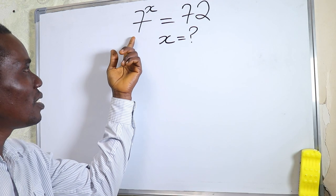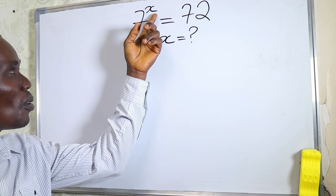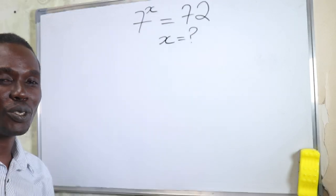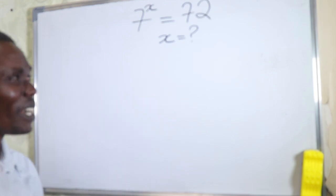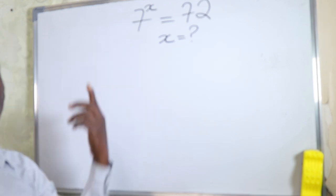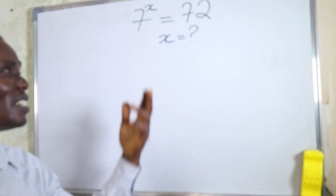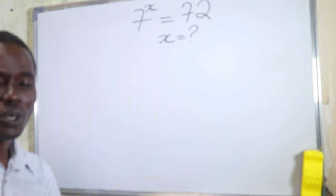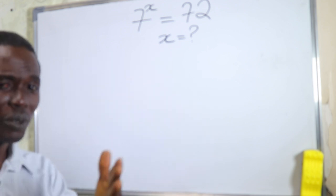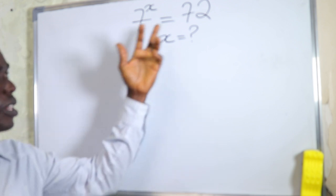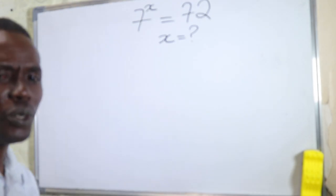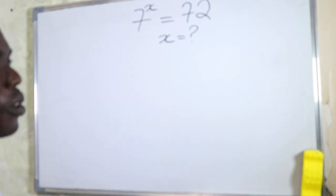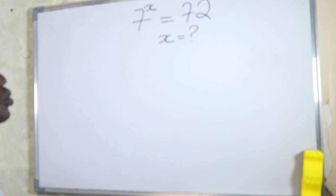Asked to solve this question — 7 to the power of x equals 72 — what will immediately come to your mind? The use of logarithm, or the use of natural logarithm? You can use logarithm or natural logarithm in solving this question. Now let's look at the use of logarithm in solving this question.